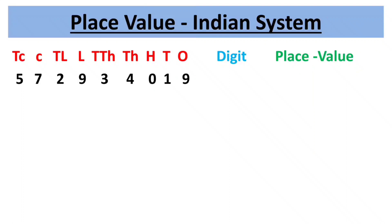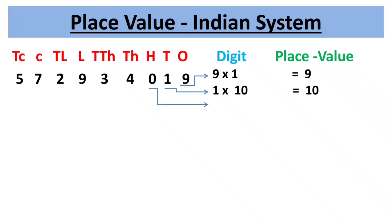Starting from the right, the first period is ones, consisting of three place values: ones, tens, and hundreds. Place value of 9 is 9 × 1 = 9. Place value of 1 is 1 × 10 = 10. Place value of 0 is 0 × 100 = 0.